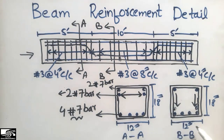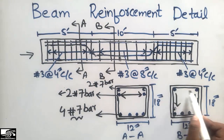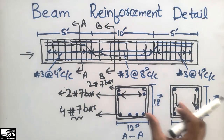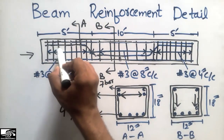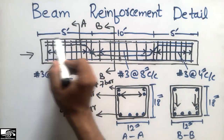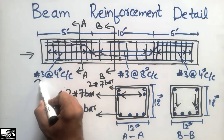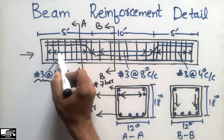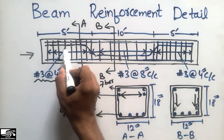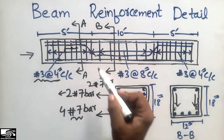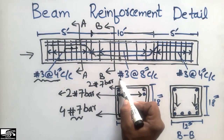The top bars continue through the full length of the beam and are visible in Section BB as well. This is how to read the section drawings. The stirrups are also shown throughout the length of the beam, divided into three zones: a 5-foot length at the start, a 10-foot length in the middle, and a 5-foot length at the end. In the 5-foot end zones, number 3 stirrups are used at 4 inches center to center.